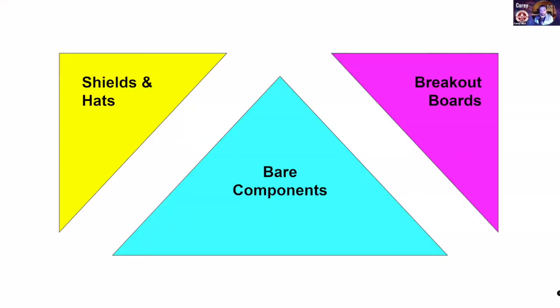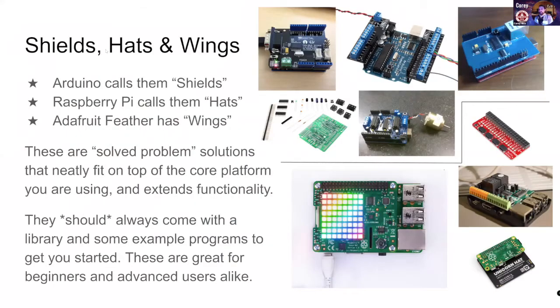There are many things common about the three platforms, so we'll go through the classes of add-ons available. We have three categories: shields, hats, and wings; then breakout boards; and then bare components. These are different levels of attachments. Shields, hats, and wings — like the example board I've given to all of you — are things where for Arduino they're called shields, for Raspberry Pi they're hats, and for Adafruit they're wings.